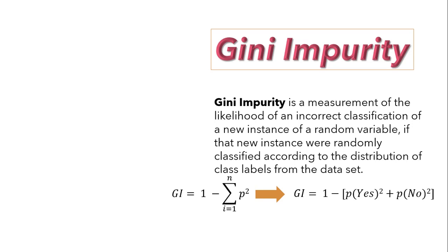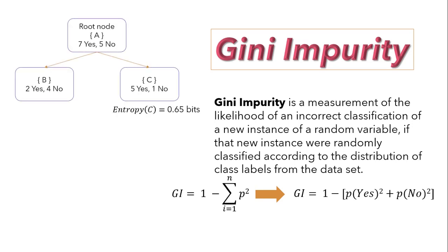Let's understand this with one example. We have calculated the entropy for node C as 0.65. Let me substitute the values in Gini impurity equation for you. That will be 1 minus P of yes - here P of yes will be square of probability of yes over probability of yes plus probability of no. This will be square of 5 over 6 plus probability of no, and probability of no will be square of probability of no over probability of yes plus probability of no, which is calculated as 1 over 6. Gini impurity will be 0.3.